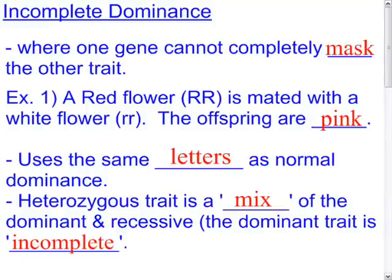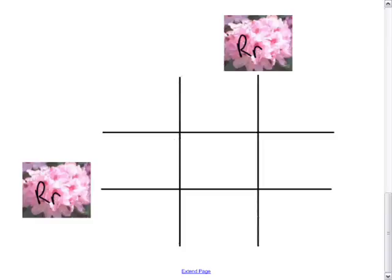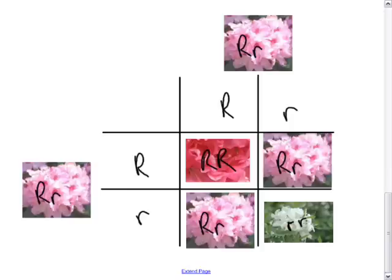It can't quite go all the way to red — it just gets part way. As an example, using our red flower and white flower producing pink offspring: if you took those pink offspring, bred them together (the F1 generation) to get the F2 generation, you would get homozygous dominant (red), homozygous recessive (white), and heterozygous incompletely dominant (pink).